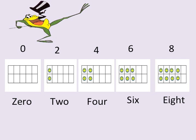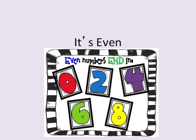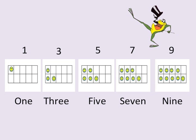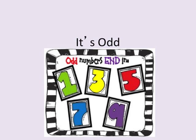0, 2, 4, 6, 8 — it's even. 1, 3, 5, 7, 9 — it's odd.